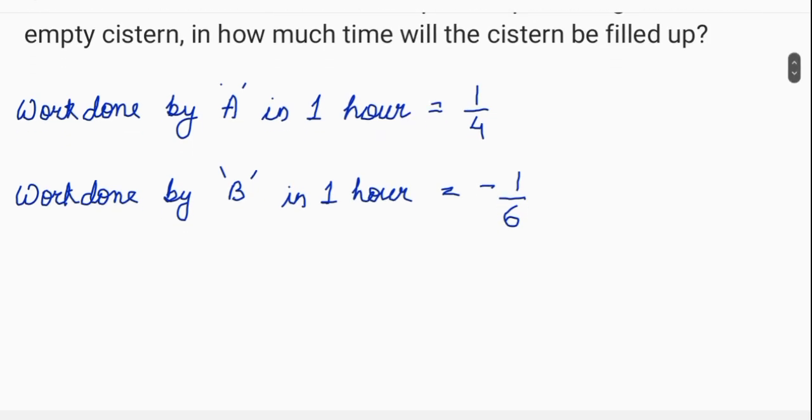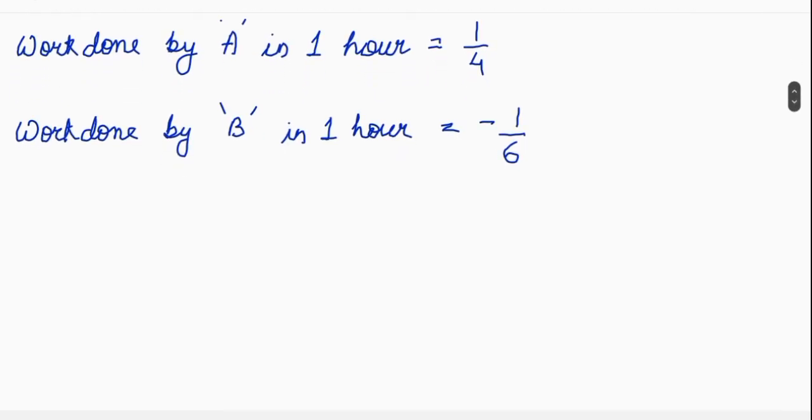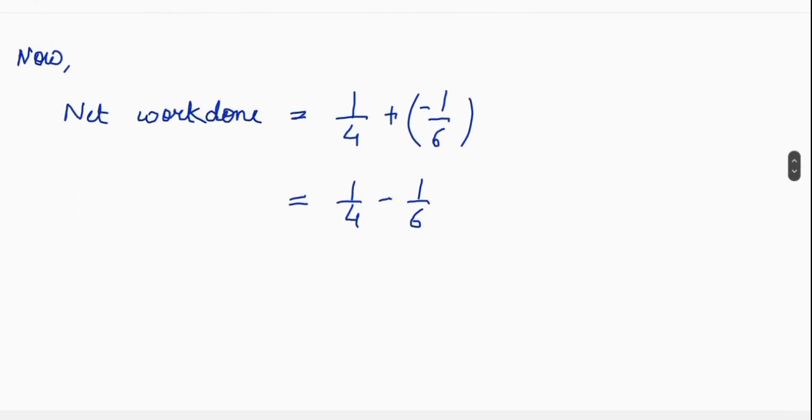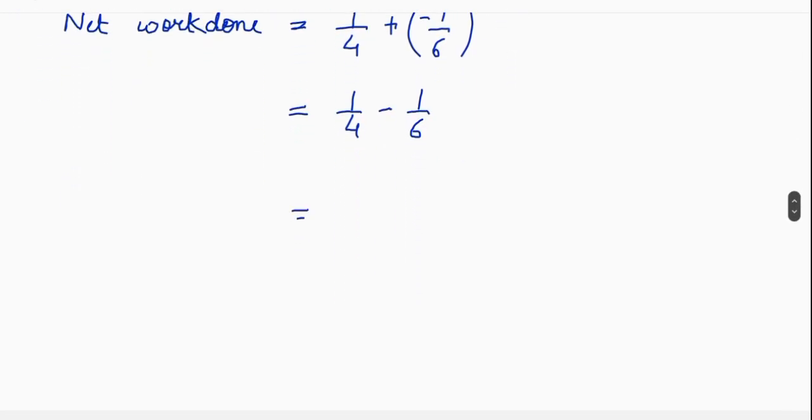Now here we will find the net work done. Net work done will be 1 upon 4 minus 1 upon 6. We will simplify this. Now here we will take LCM. LCM will be 12. So here we will have 3 minus 2, that is 1 upon 12.